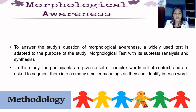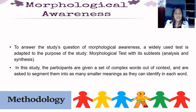To answer this study's questions on morphological awareness, a widely used test was adapted to the purpose of the study — morphological tests with its subtests: analysis and synthesis. The participants are given a set of complex words out of context and are asked to segment them into as many smaller meanings as they can identify in each word. The words are decontextualized to control for the possible effect of context in guessing the meaning of words. The morphemes are neutral in the sense that they neither cause phonological and orthographical change nor stress assignment changes in the stem.